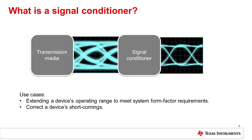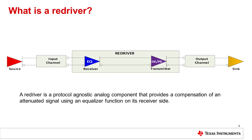Use cases for a signal conditioner include extending a device's operating range to meet system form factor requirements, and correcting a device's shortcomings. A re-driver is one type of signal conditioner. In the simplest terms, a re-driver is an analog component that provides a compensation of the attenuated signal using an equalizer function on its receiver side.